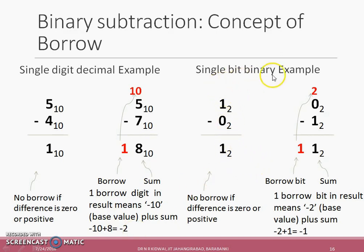In the similar way, single bit binary number subtraction can be explained. If the first number is less than the second number, then a borrow is required from higher position that adds 2 to the magnitude, the base value, and resulting in 2 plus 0 minus 1 that is equal to 1 as its output or difference.